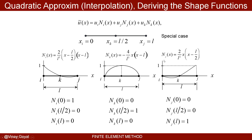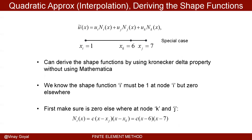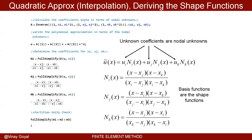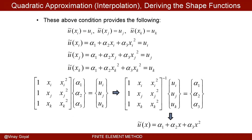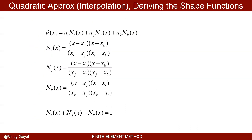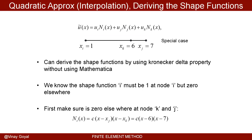That's exactly what we want: the shape function to be one exactly where we need it. Why? Because u-tilde at x_i has to give me u_i, so N_i must be one there and everything else must be zero. Similarly, u-tilde at x_j has to be u_j, so N_j must be one there and everything else must be zero. That's why this works out, and it makes physical sense. Now, if I don't want to use Mathematica to derive shape functions, I have a trick to get them just by looking at the problem.